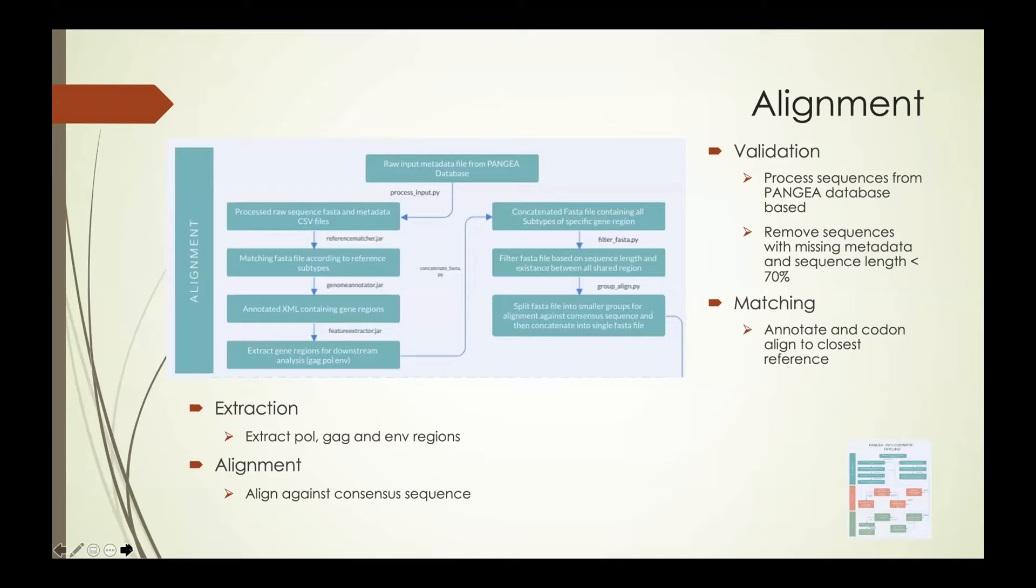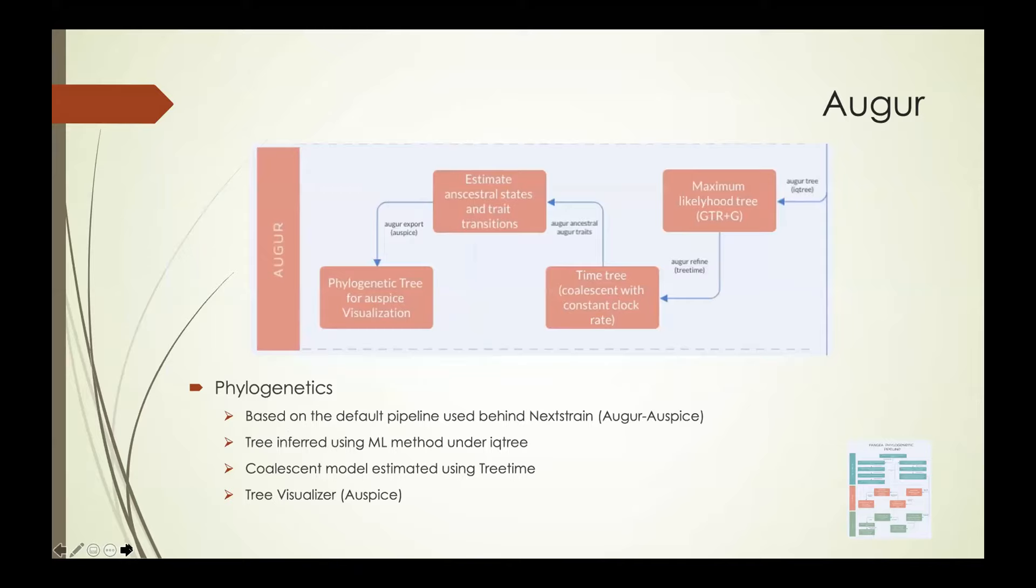And on this pipeline we have different tools to be able to do this. Okay, and then moving on to building trees, the initial toolkits that we were using was the Augur Auspice tool, which is the tool behind Nextstrain. Basically what Augur Auspice does is it's a complete tool that takes in alignment, or even you can take in raw sequences and create the alignment for you using MAFFT.